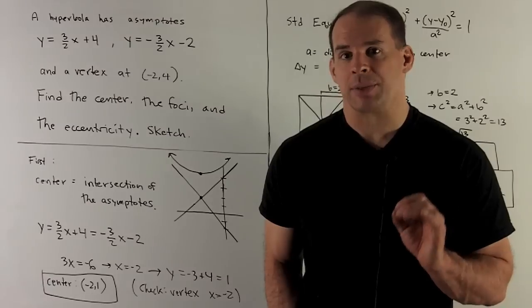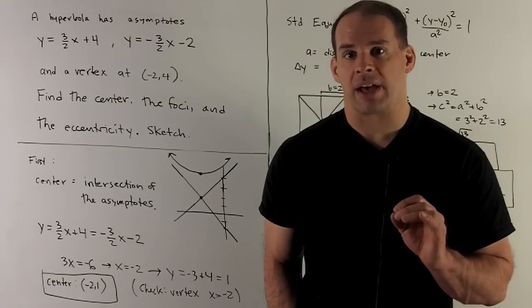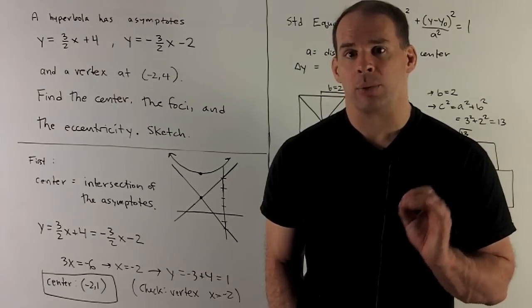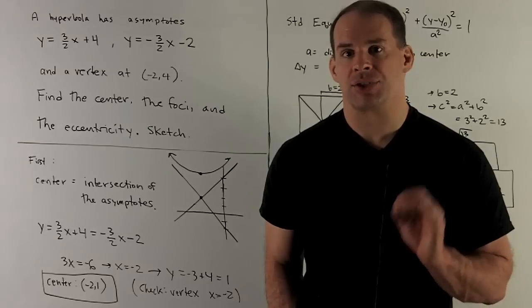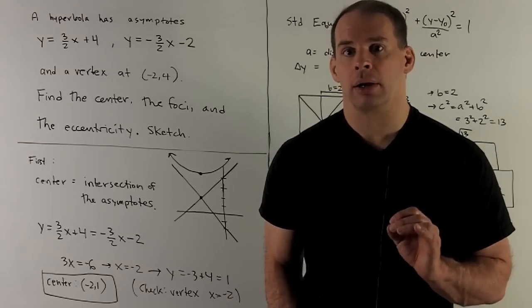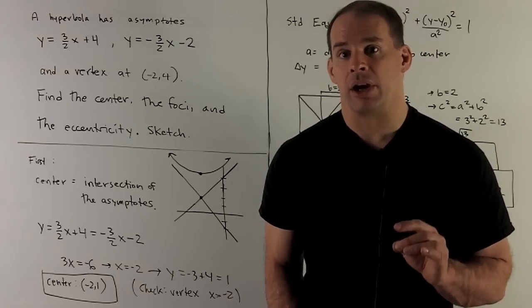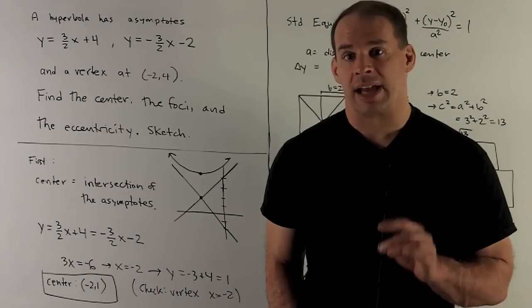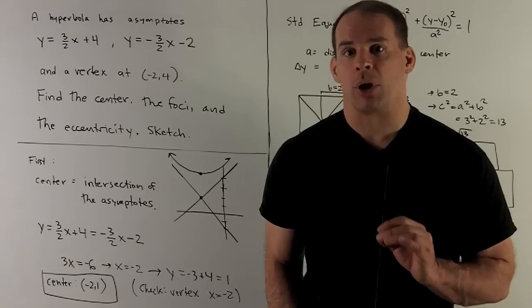A hyperbola has asymptotes y equals 3 halves x plus 4 and y equals minus 3 halves x minus 2. We also have a vertex at minus 2, 4. Find the center, the foci, and the eccentricity of the hyperbola.